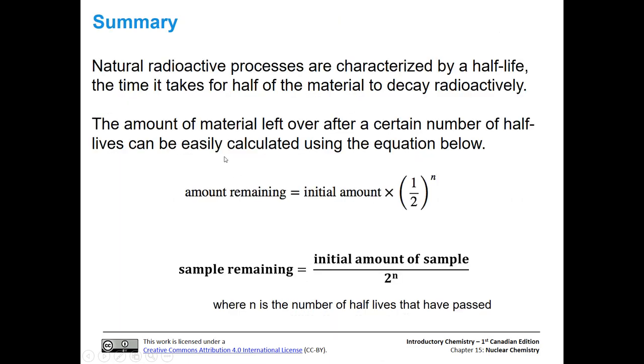Just to summarize, natural radioactive processes are characterized by half-life, and that's the time it takes for half of the material to decay radioactively. We can calculate the amount of material left over after a certain number of half-lives using either of these two equations, just keeping in mind that n is the number of half-lives that have passed.